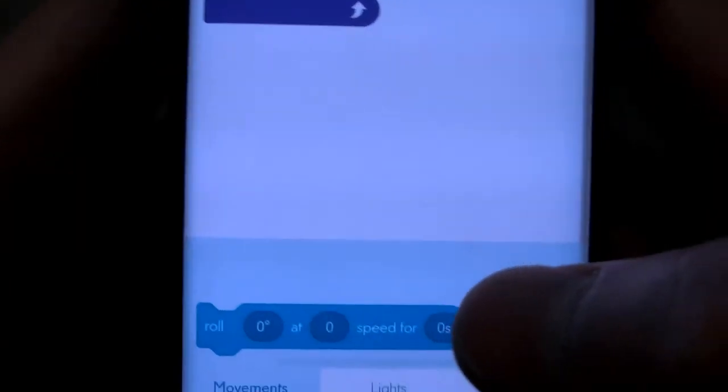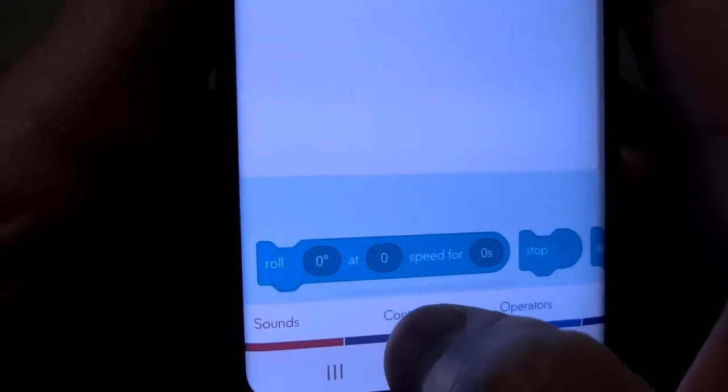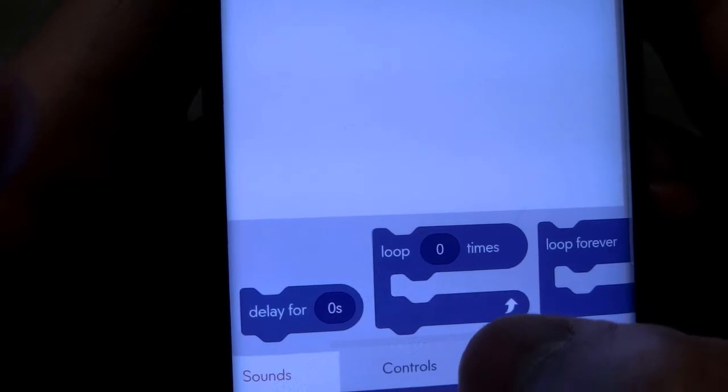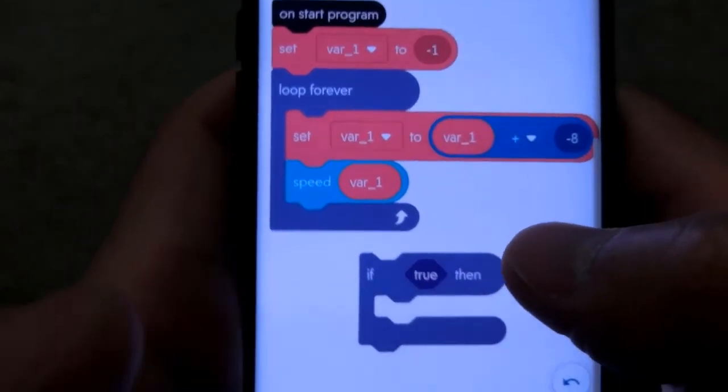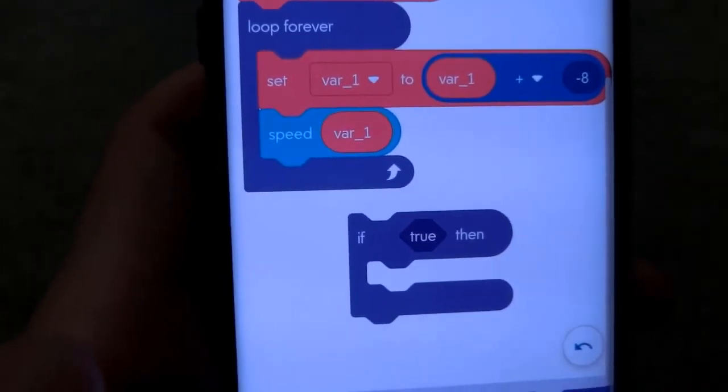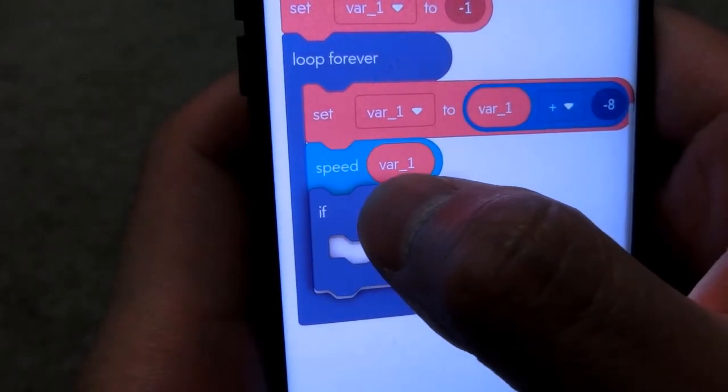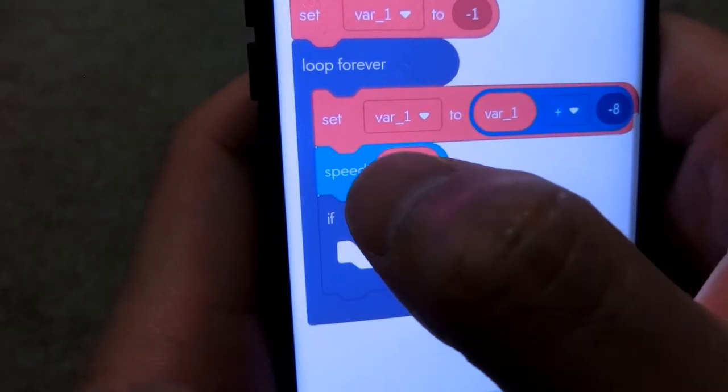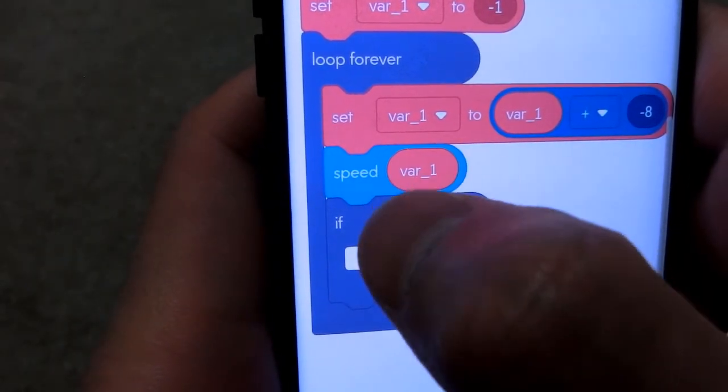The if statement belongs to the control tag. Let's go to control and find the if statement. We're going to do a quick check after every time we update the speed, which means it has to follow this speed update, so it's going to be here.